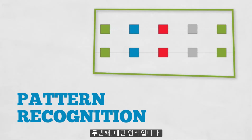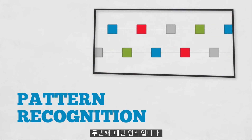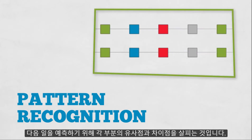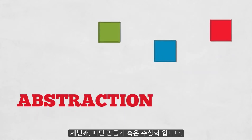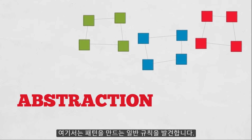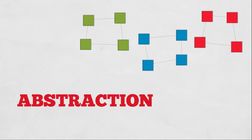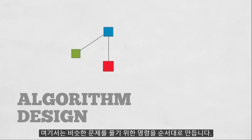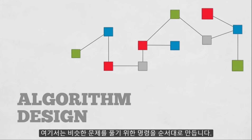Then there's pattern recognition, which is finding similarities and differences between these parts in order to make predictions. Next is pattern generalization, or abstraction, which is finding the general principles that generate these patterns. And finally, there's algorithm design, which is developing the step-by-step instructions that solve similar problems.